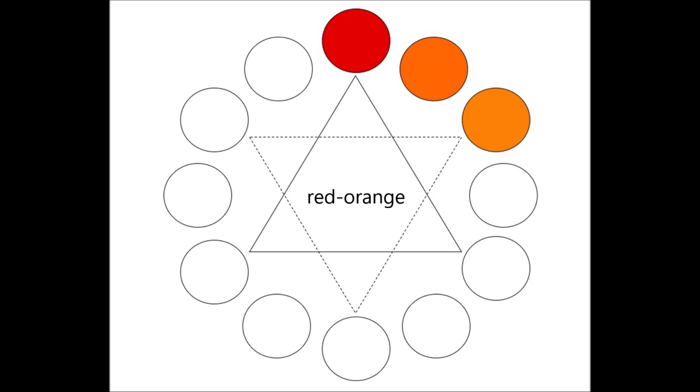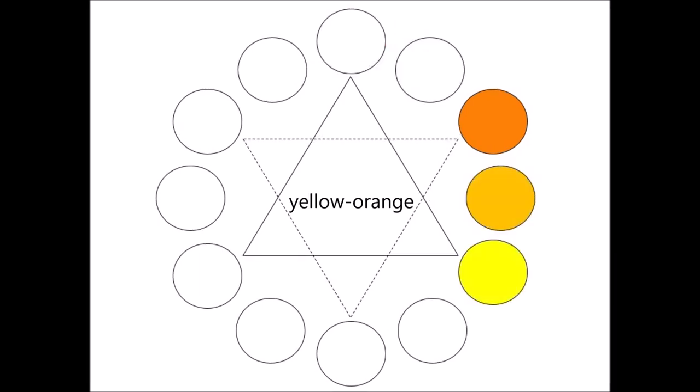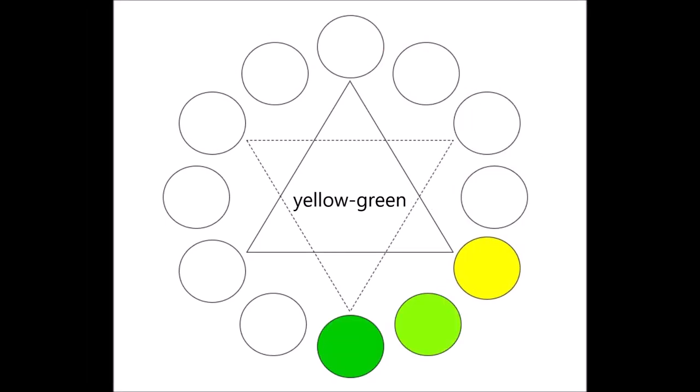The primary color is always named first because it is the strongest in the mix. Yellow-orange is created by mixing yellow and orange. Yellow-green is created by mixing yellow and green.